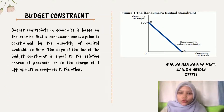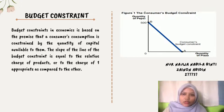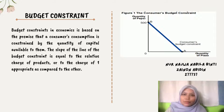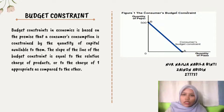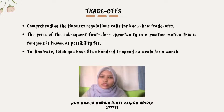Budget constraint in economics is based on the premise that a consumer's consumption is constrained by the quantity of capital available. For example, if the buyer purchases no pizza, they can afford 500 units of cola at point B. If they buy no cola, they can afford 100 units of pizza at point A.